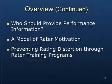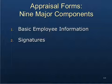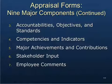There are nine major components for appraisal forms. First, basic employee information. Second, signatures — you want to make sure that both people sign so there's a paper trail, confirming the information has been discussed between the involved parties. Third, accountabilities, objectives, and standards — the criteria the employee is being evaluated on must be clear and laid out.